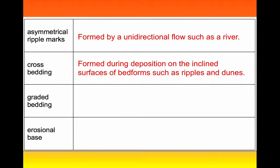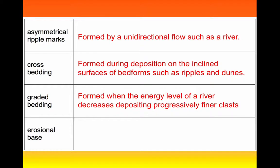Graded bedding can only really be formed in a river or in a flow of water to be more accurate. And this is formed when the energy level of a river decreases, so you have coarser grain fragments deposited first, and then as the river slows, finer grain clasts get deposited above.